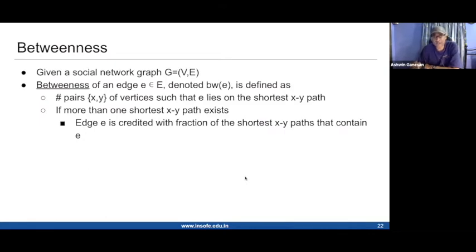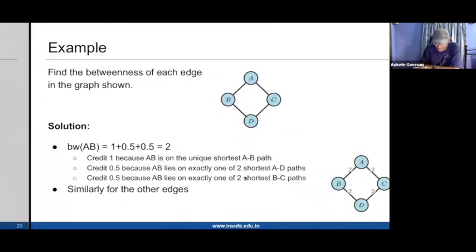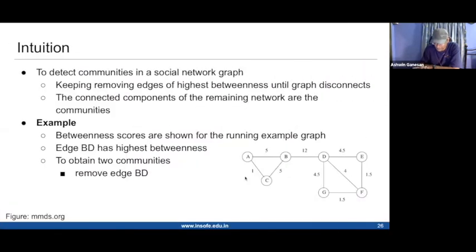If the edge e lies on, let's say, two of the five shortest paths, then the credit that edge e gets for the pair x, y would be two over five, or 40%, or 0.4. The betweenness doesn't have to always be an integer; it could be fractional as well. We saw some examples last time of how to compute the betweenness for some simple examples.